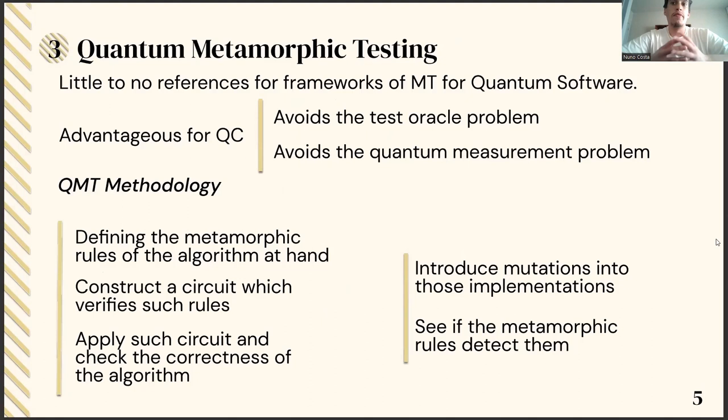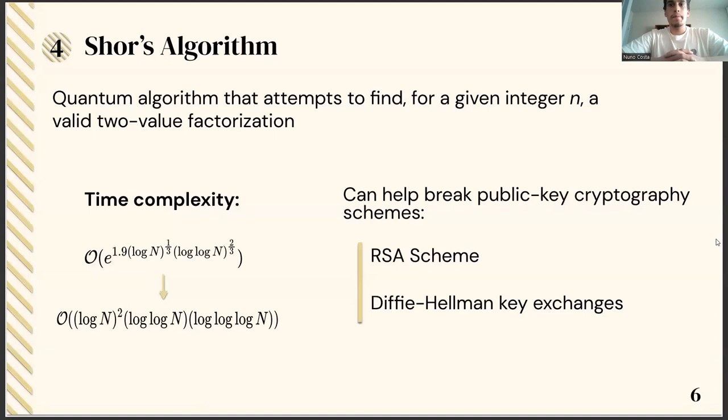As such, metamorphic testing seems like a good fit for quantum testing, even though there are little to no references to it, since it avoids the test oracle problem and the quantum measurement problem. To apply this methodology, we would need to define the rules or properties for the quantum algorithm at hand, construct a circuit that verifies such rules, and run it to check the correctness of the algorithm. However, since a lot of implementations of some algorithms are already proven to be correct, to actually see if this methodology is good, we can add mutations to the code and see if the metamorphic rules detect those changes or those errors.